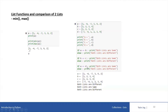Now comparing A and D. Both list variables A and D are having the same values but the order is different. Though the values are the same and the contents are the same, because the order is different, we are getting the output as 'both lists are different'. So you can look at the output — it says 'both lists are different'.